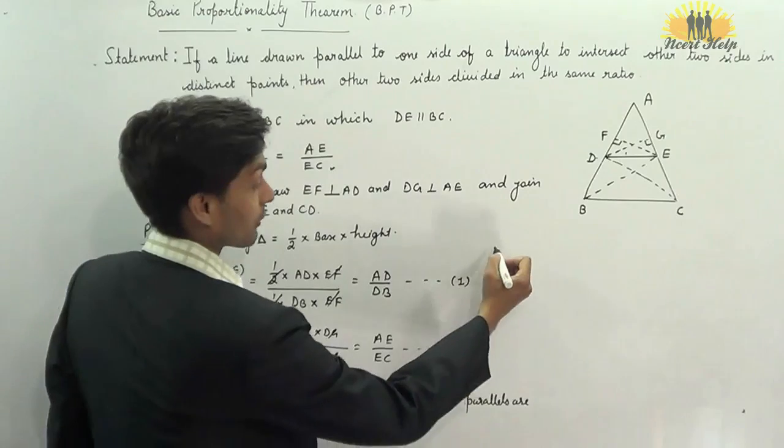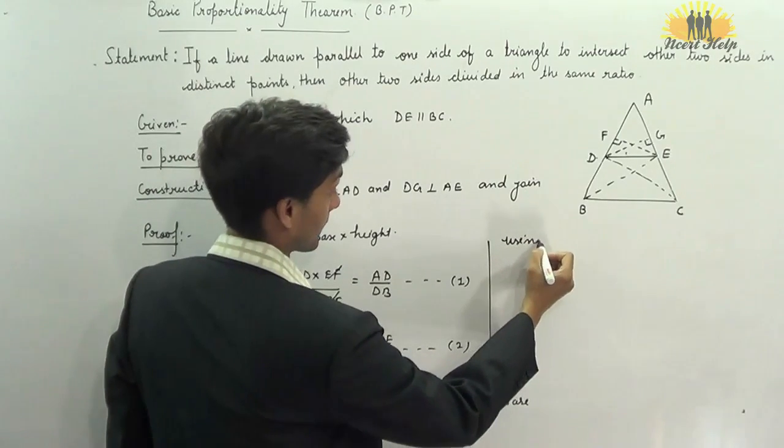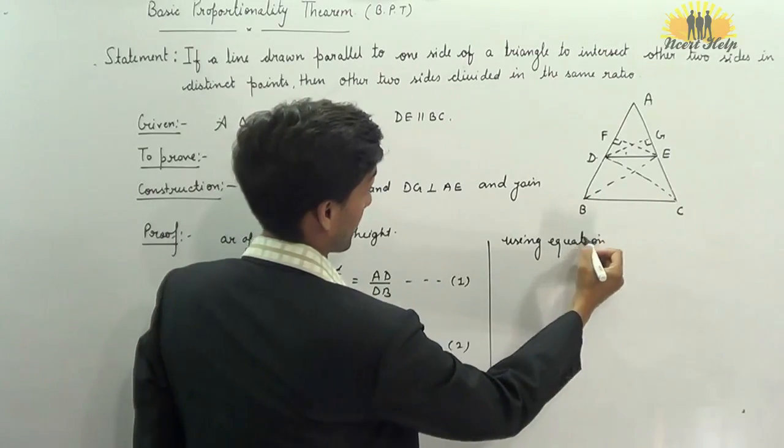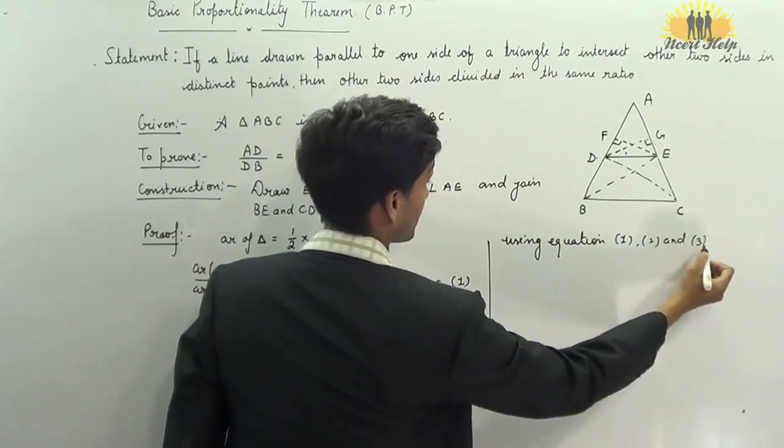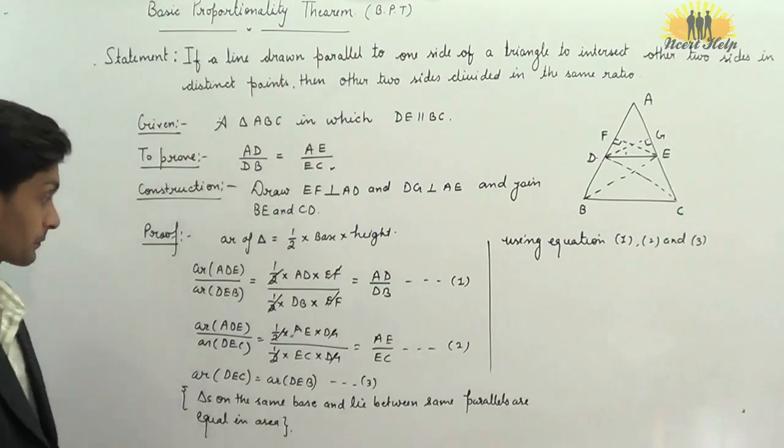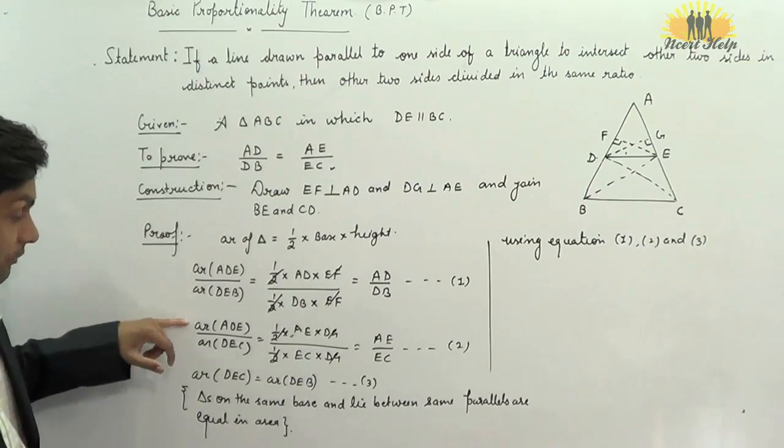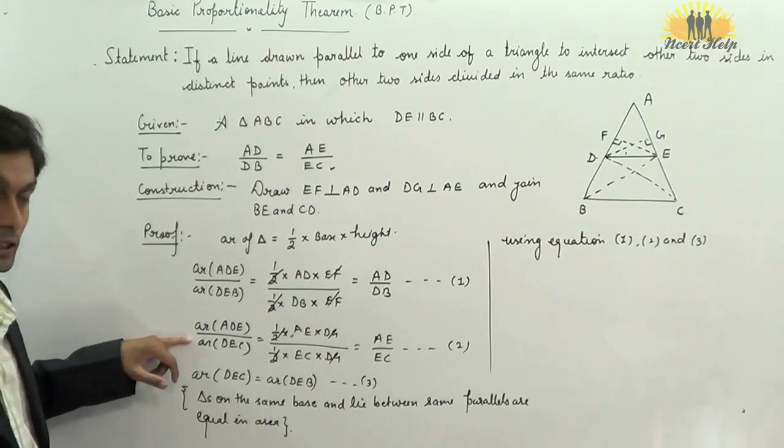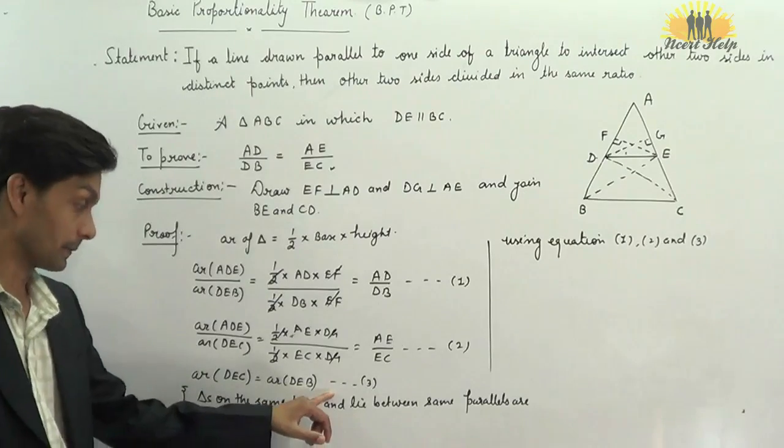By using equations 1st, 2nd, and 3rd, what do we get? In 1st and 2nd, numerator of left hand sides are equal, and denominators are also equal, with the use of equation number 3. So, from equations 1st and 2nd, left hand sides are equal, which implies that right hand side of the equations are also equal.